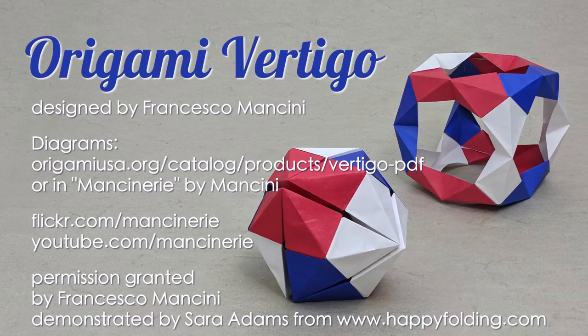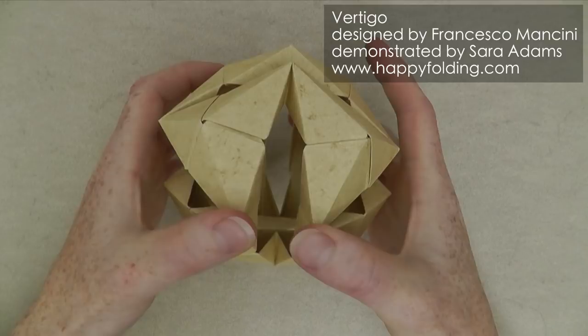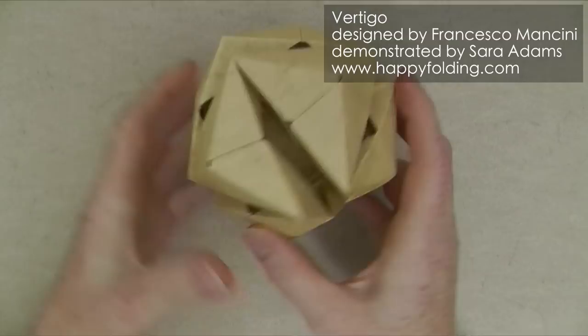In this video I'm going to show you how to fold an origami toy called Vertigo designed by Francesco Mancini. I recommend you use quite strong stiff paper, for example elephant hide like I did here.